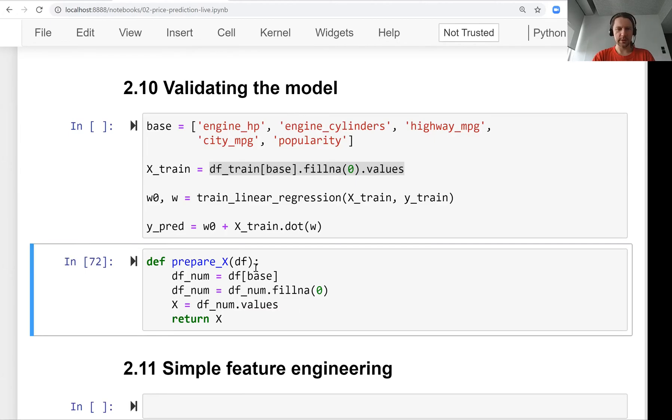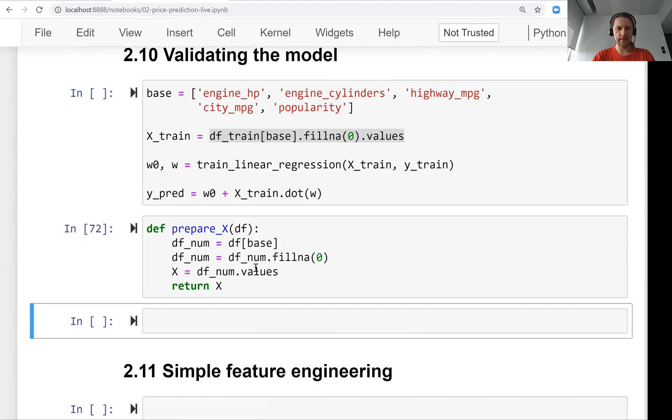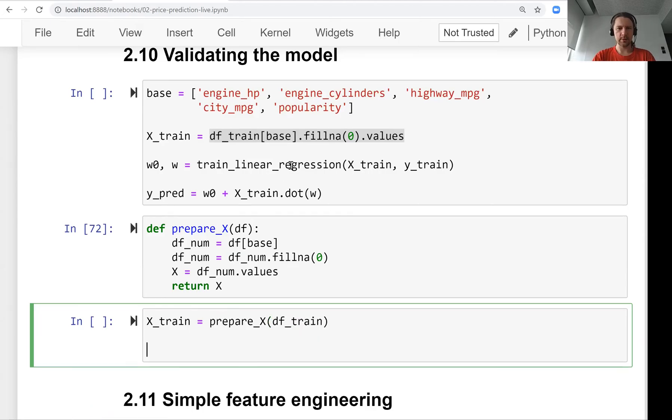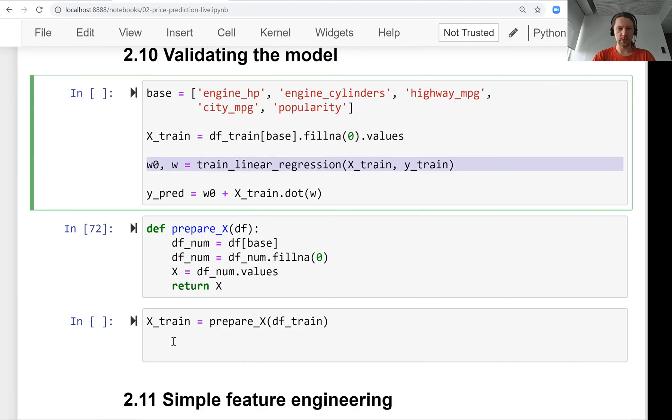So we have this function. From one line now we have five, but at least it's easier to understand what's going on. Let's use it for the training matrix. We invoke prepare_X on the training dataset and then train the model again.